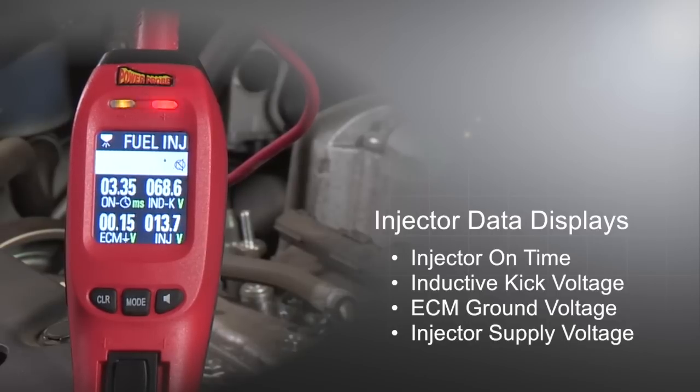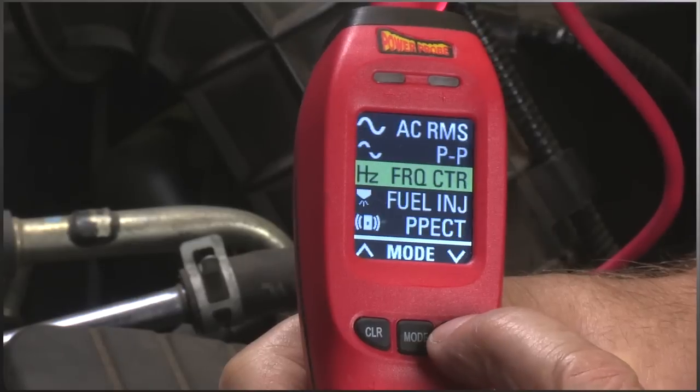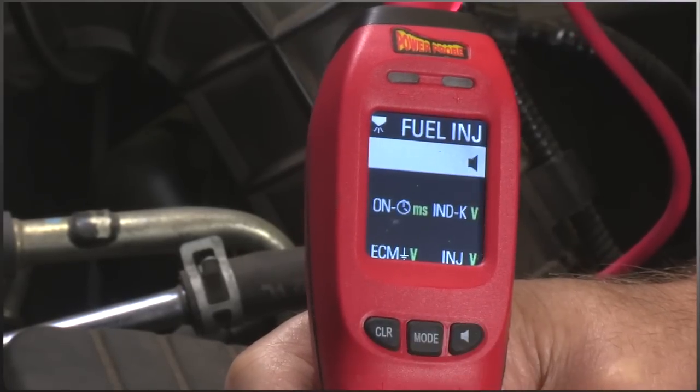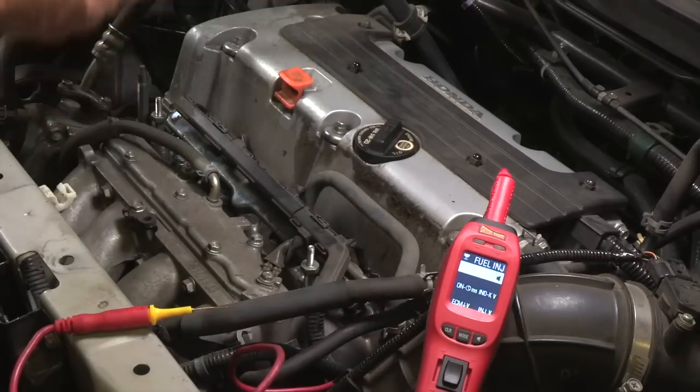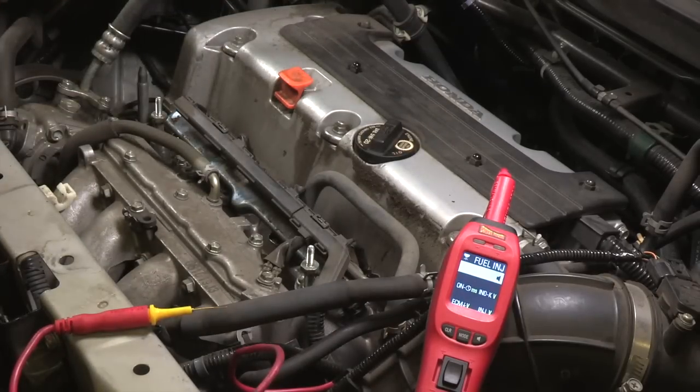To test the injector circuit using the Power Probe 4, select Fuel Injector Mode from the menu, then locate the control side of the injector circuit and back probe the terminal.